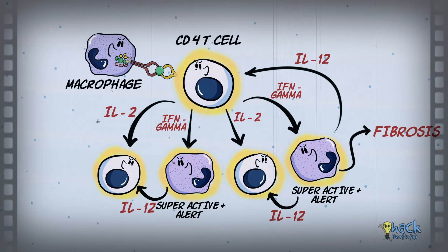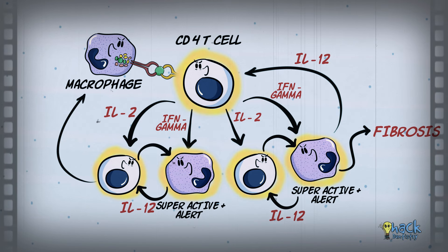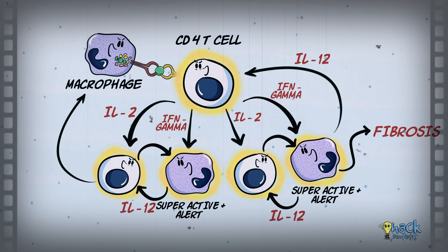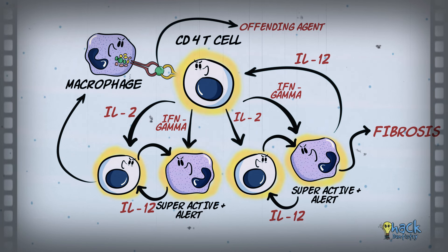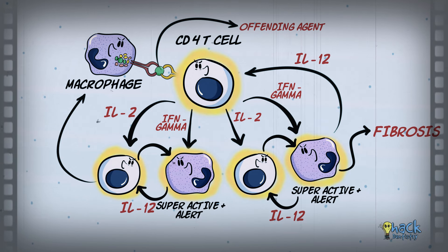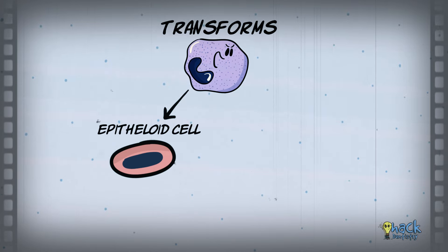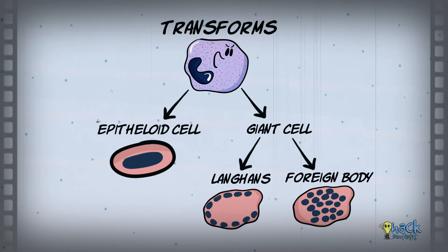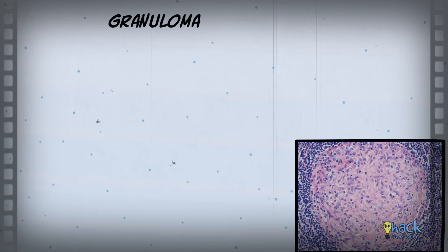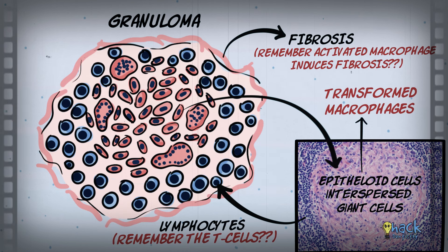This creates a feedback loop with macrophages activating T cells and T cells activating macrophages back and forth, which can become never-ending unless the offending agent is removed. The chronic feedback loop and constant activation of macrophages by interferon gamma causes macrophages to transform into epithelioid cells, and also causes fusion of adjacent macrophages to form multinucleated giant cells like Langhans giant cells and foreign body giant cells. So granuloma essentially is a collection of epithelioid cells interspersed with giant cells, surrounded by lymphocytes and fibrosis.